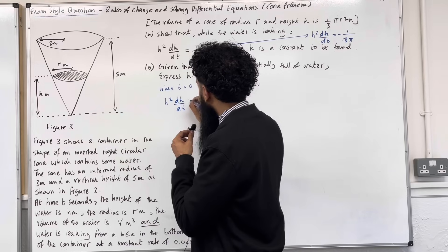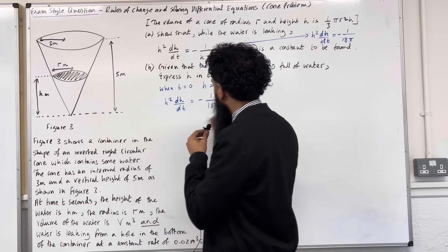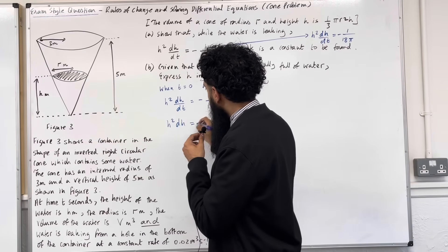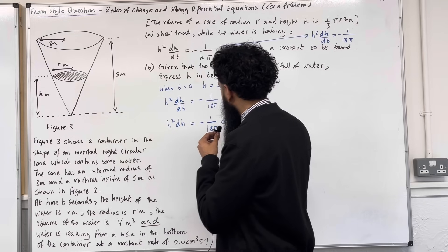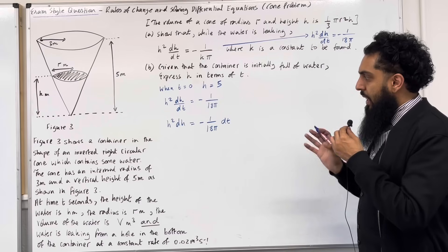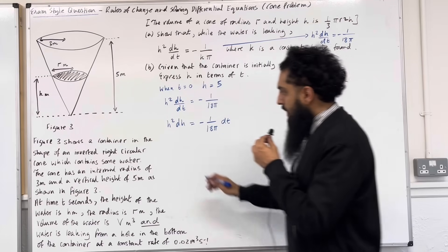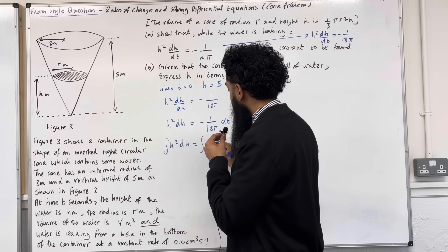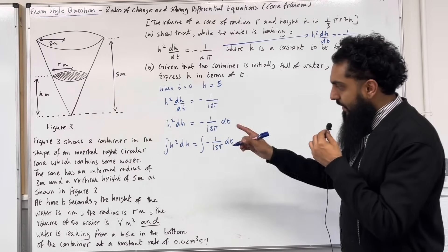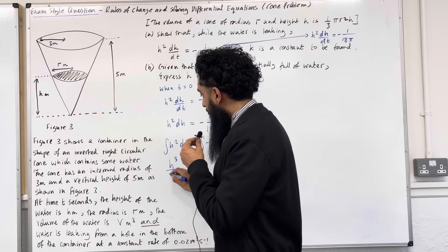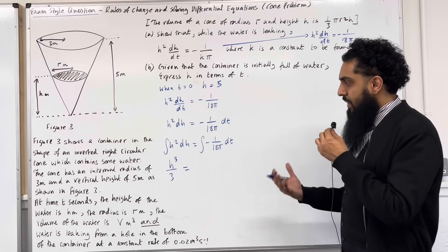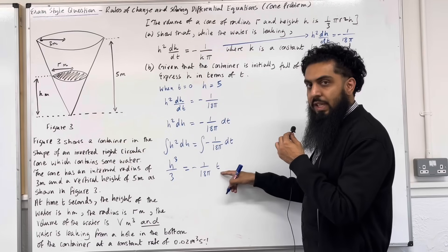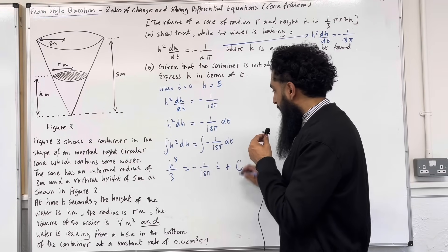Multiplying both sides by dt gives h² dh = −1 over 18π dt. The variables are now separated, so we integrate both sides. The left-hand side integrates to h³/3; the right-hand side integrates to −t over 18π plus c, the constant of integration.